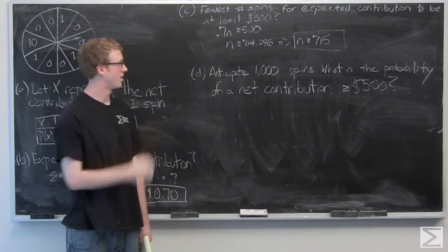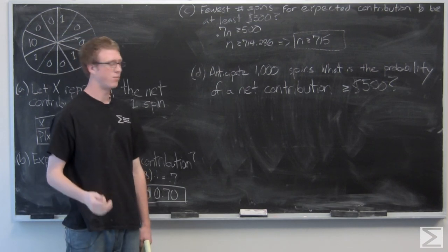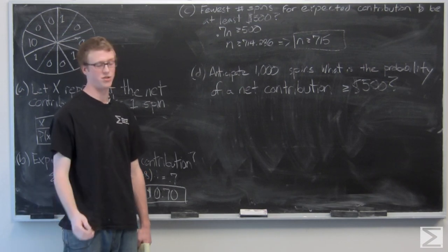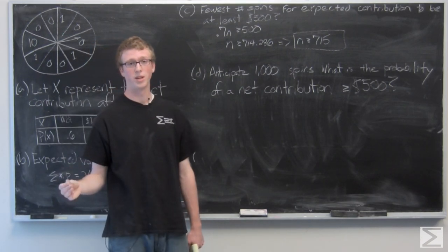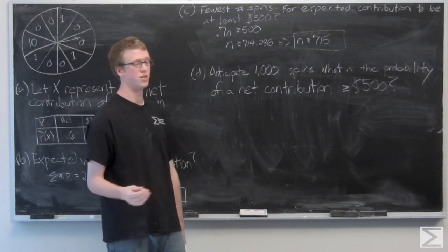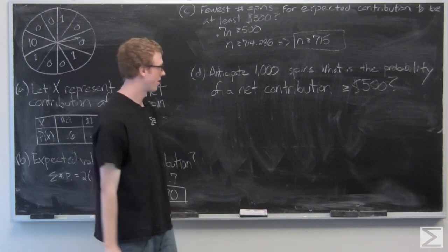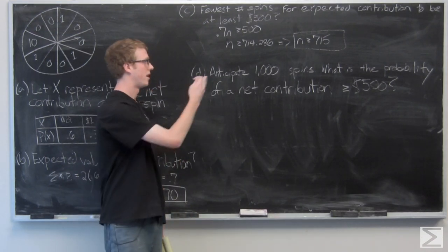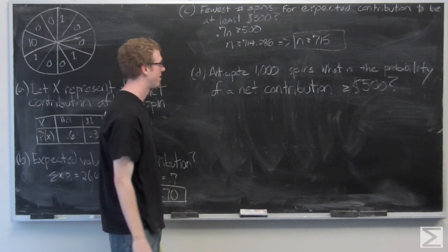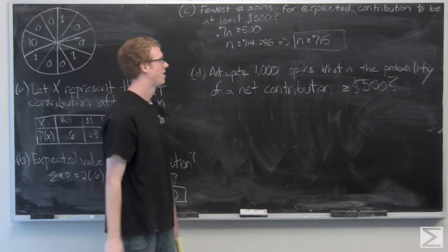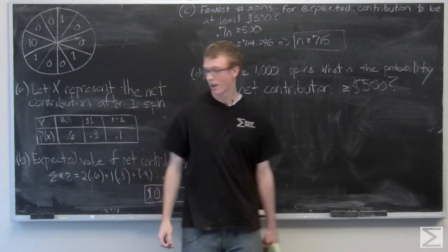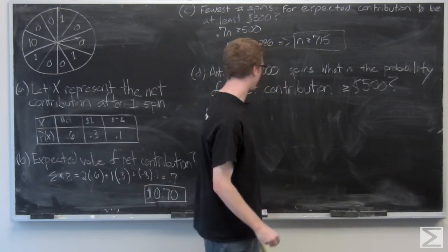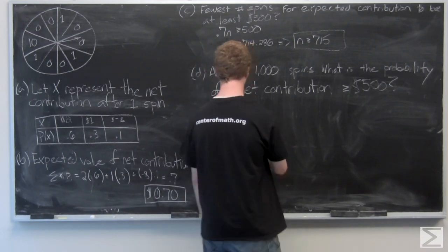So now in part D, the charity gets a thousand spins of the wheel, and they're asking us what the probability is for the net contribution to be over $500. Well, n is equal to a thousand, and the expected value is going to be n times what we calculated in part B, so it's just going to be 1000 times 0.7.